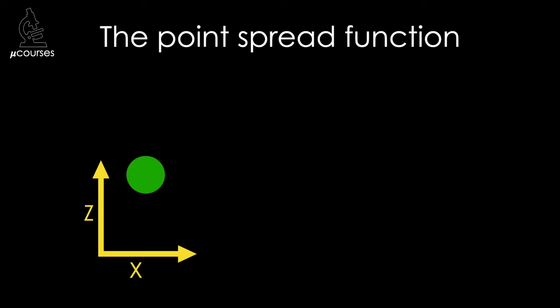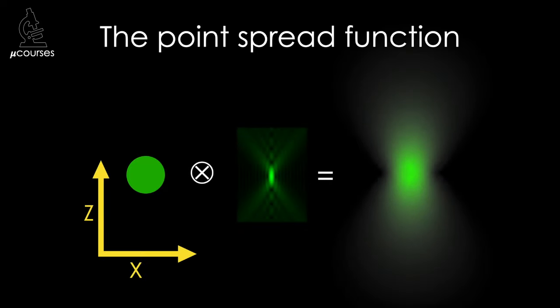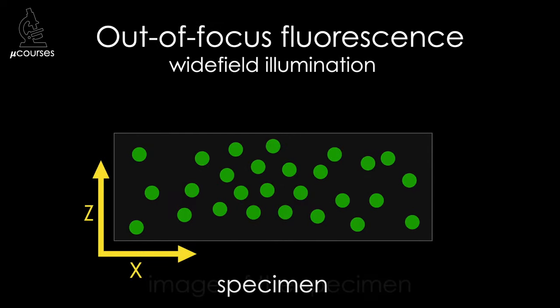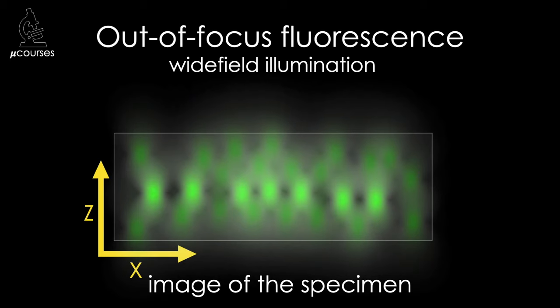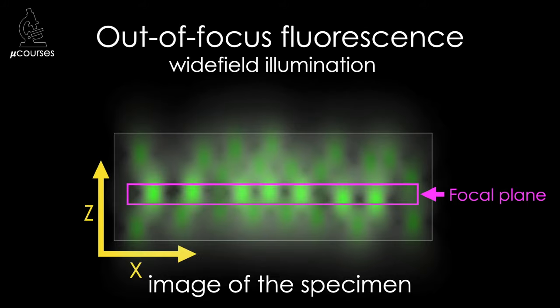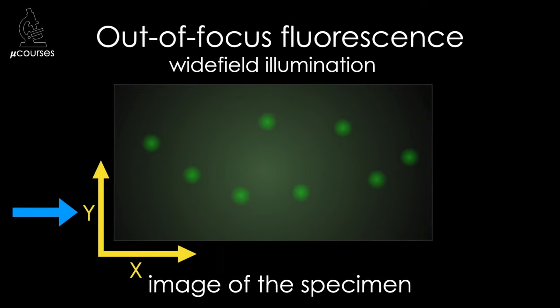Each object in the optical image of the specimen generated by the microscope is convolved with the microscope point spread function, which results in a blurred image of the object. This concept is explained in detail in the point spread function microcourse. So the image of each object is blurred by the point spread function. The objective is focused on a plane within the specimen, but fluorescence from above and below that focal plane spills into the focal plane, which can be seen in both the XZ and XY images of the specimen, where it appears as background fluorescence.